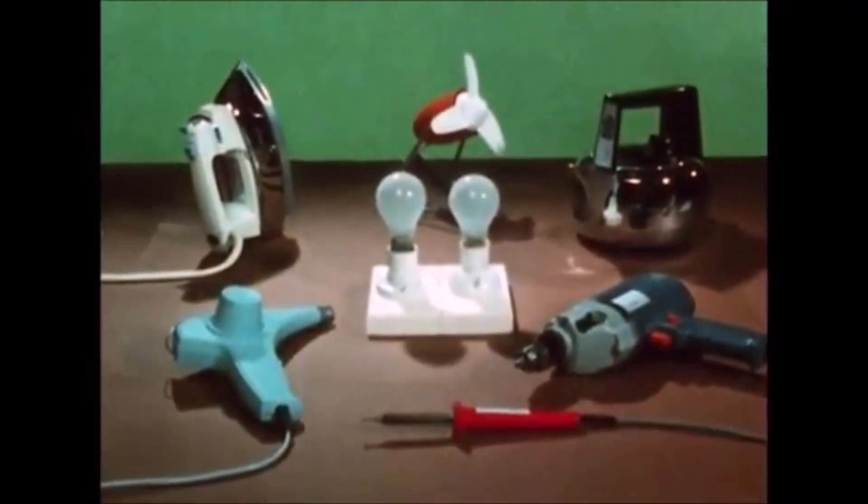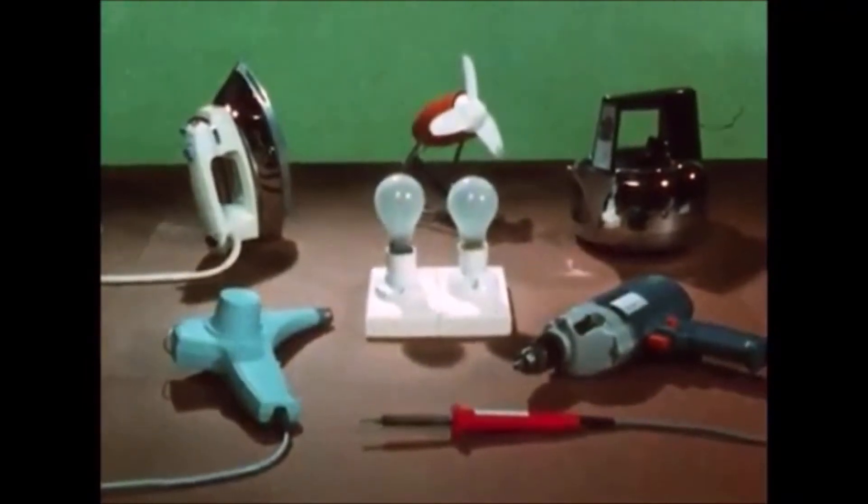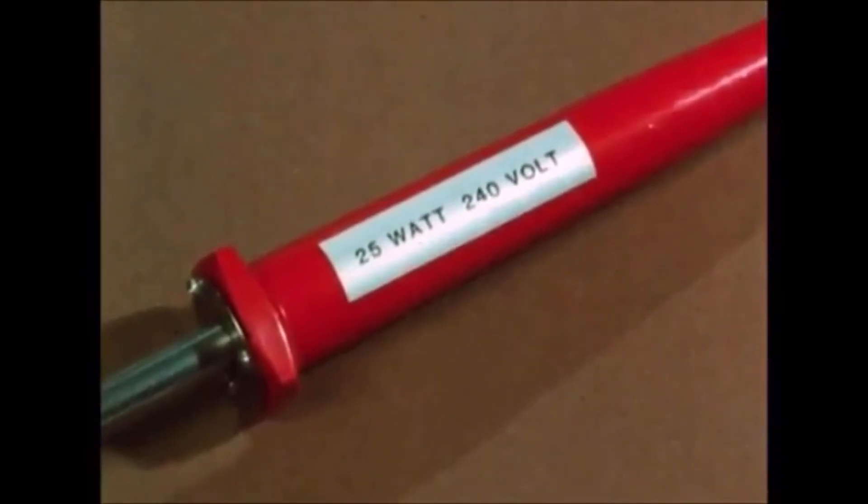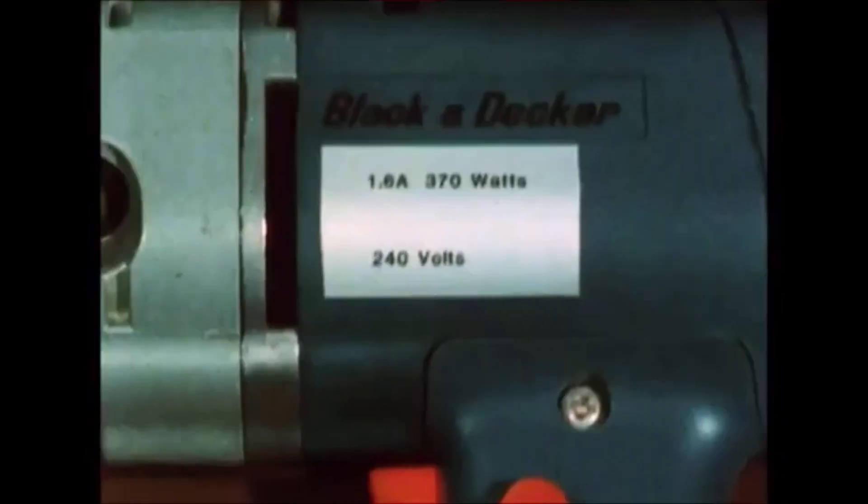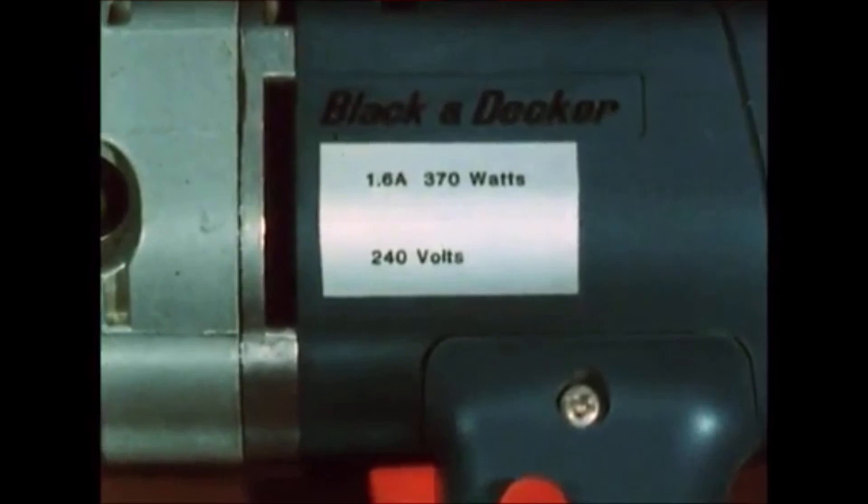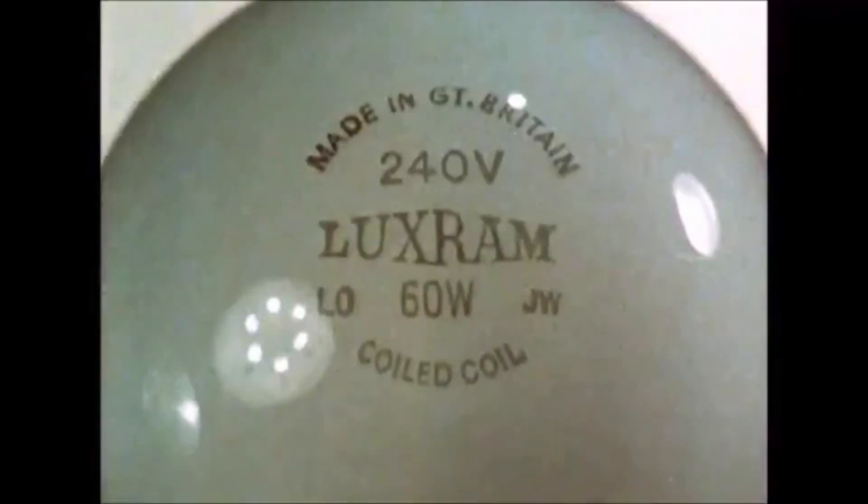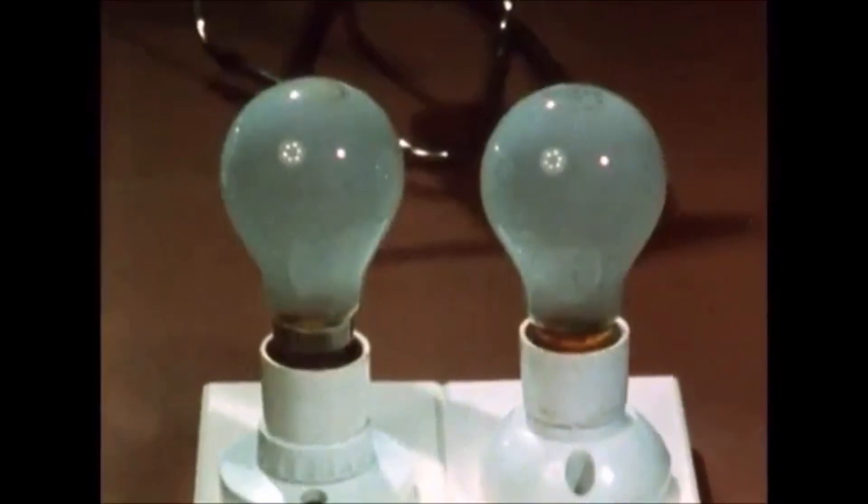As on this soldering iron, it's the same with this drill motor, and with this lamp which shows 240 volts and 60 watts. 60 watts is the power rating and it indicates the rate at which the lamp converts electrical energy to light.